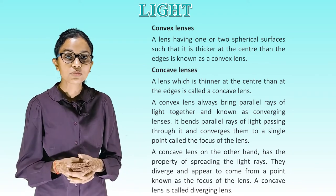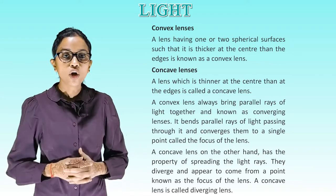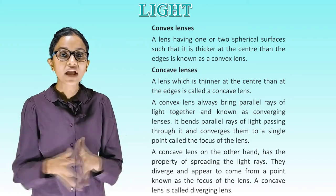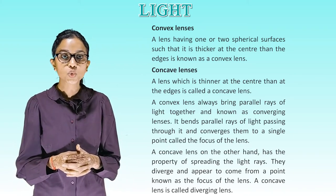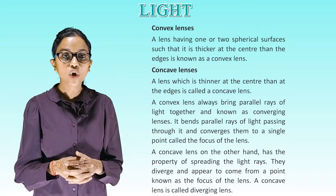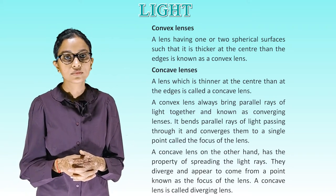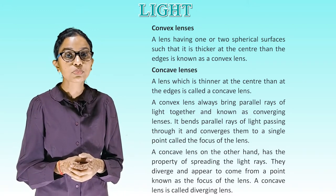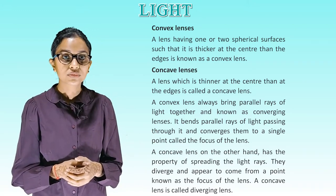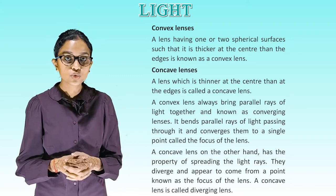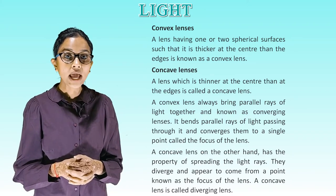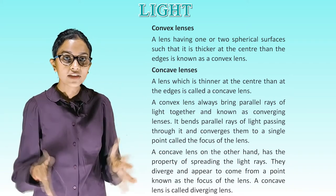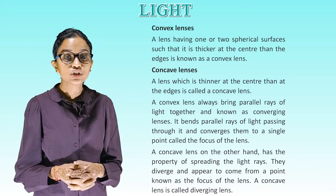A convex lens always brings parallel rays of light together and is known as a converging lens. It bends parallel rays of light passing through it and converges them to a single point called the focus of the lens. A concave lens, on the other hand, spreads the light rays — they diverge and appear to come from a point known as the focus of the lens. A concave lens is called a diverging lens.